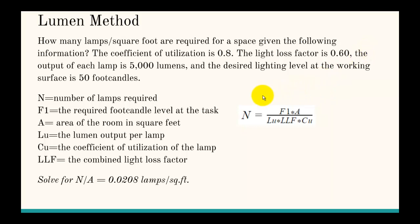To the right here is the general formula for the lumen method and all the different variables. In this case we're solving for how many lamps per square foot. Since A is the area in square feet, we divide both sides by A and get N/A equals F1 over LU times LLF times CU. Plugging in all the values, we get 0.0208 lamps per square foot.